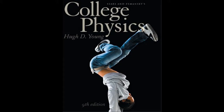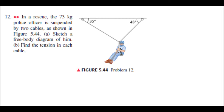The problem we will be solving can be found in Sears and Szymanski's College Physics by Hugh D. Young, 9th edition, page 153, problem 12. In a rescue, the 73-kilogram police officer is suspended by two cables as shown in figure 5.44. Part A: sketch a free body diagram of him. Part B: find the tension in each cable.